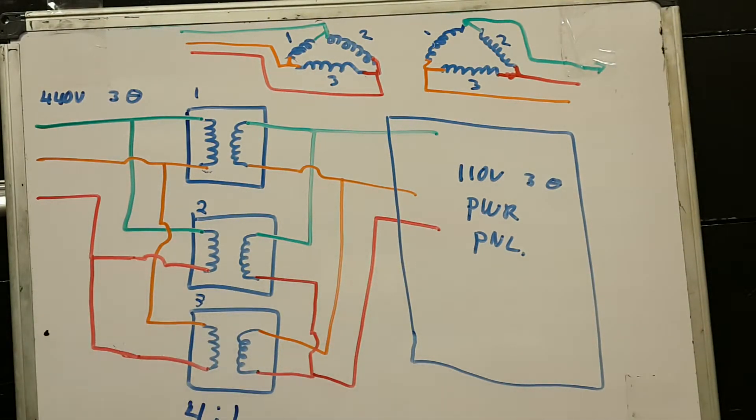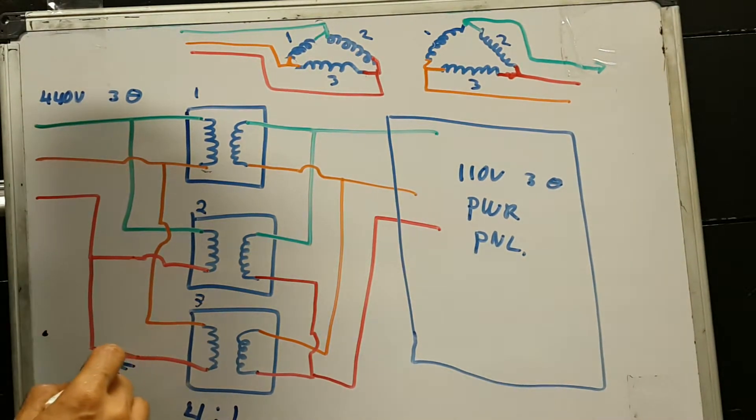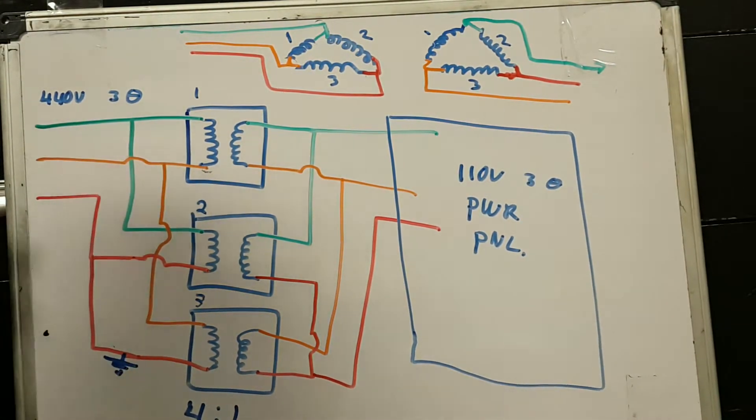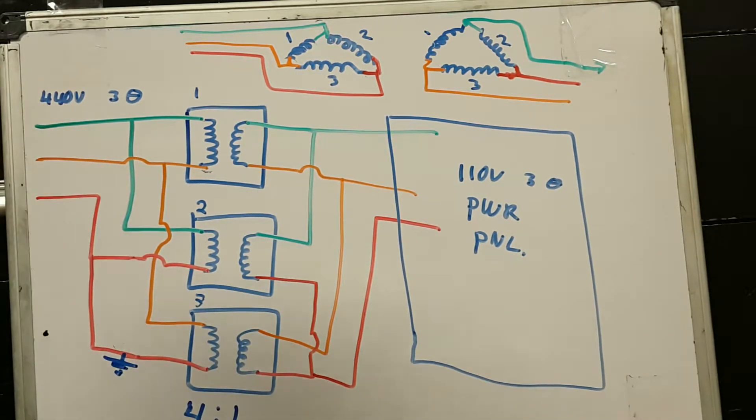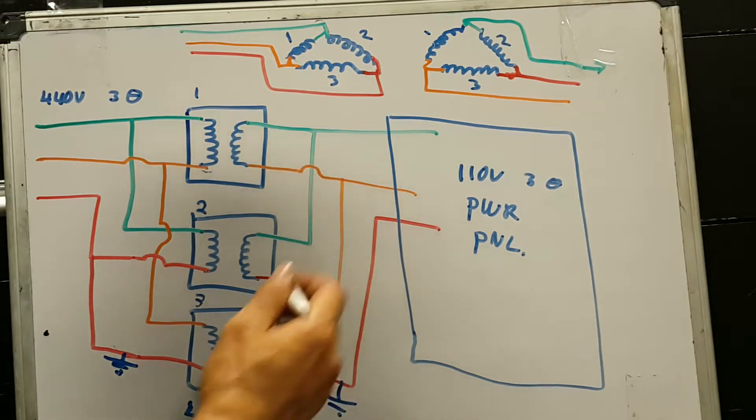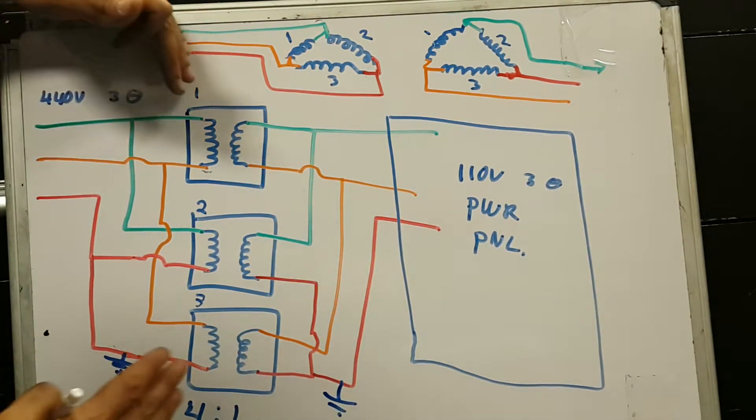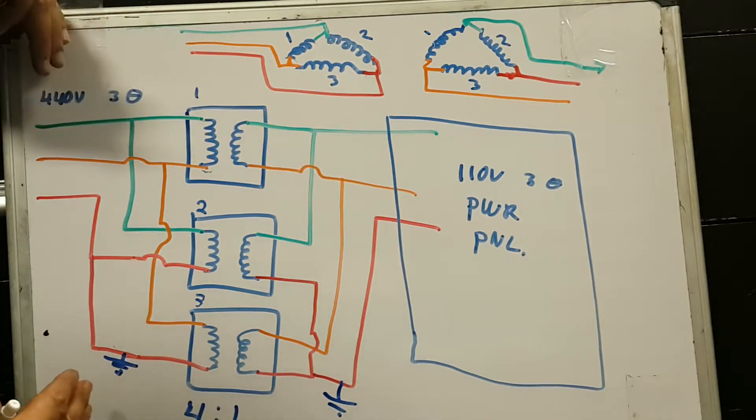Now, keep in mind that if I get a ground here, I would be able to detect it in the 440 three-phase distribution system. But if I get a ground here, it would be invisible from this side, from this side of the distribution system.